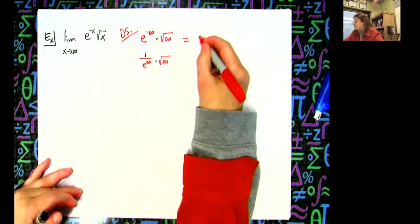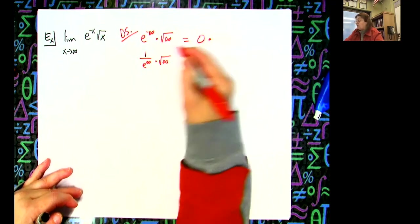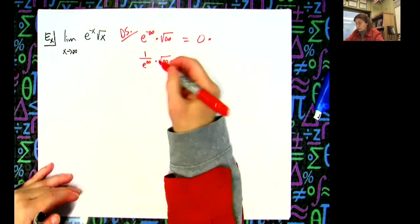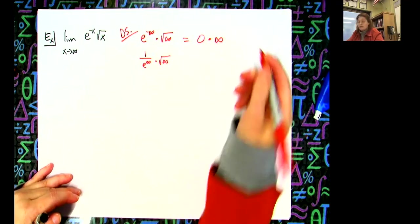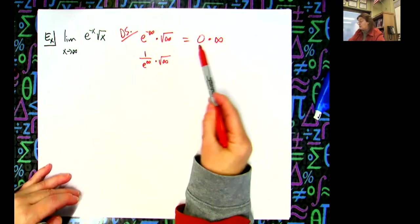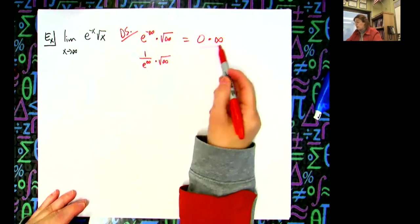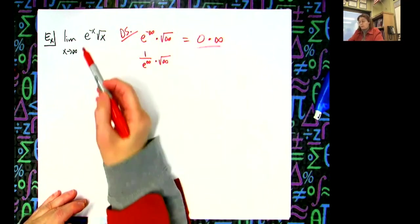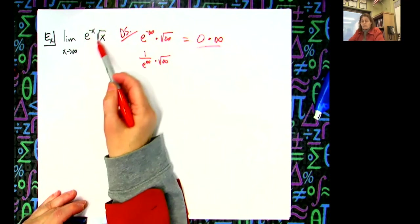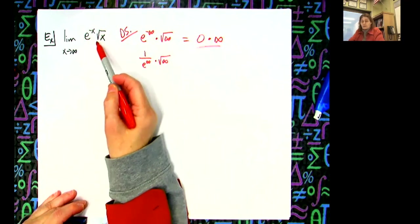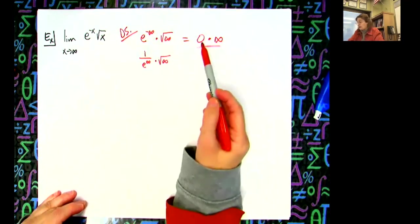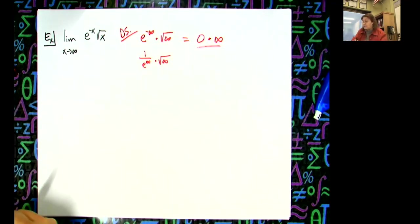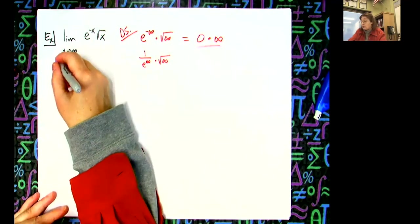So we have zero times the square root of a really big number, which is still a really big number — so the square root of infinity we can think of as infinity. This is an indeterminate form, definitely an indeterminate form, but it doesn't help us with L'Hôpital's rule because we don't have a rational function. So we need to rewrite to use L'Hôpital's rule.